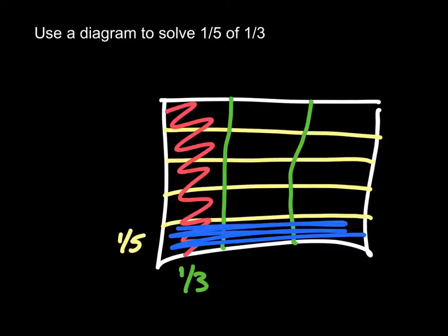I used an area model to solve this problem. I started with my rectangle, divided it into thirds vertically and into fifths horizontally, and then I shaded in my fifths and I shaded in my thirds. And when you look at it, you can see that I have only one section that has both of those numbers in it. So my numerator is going to be one. And there are 15 total pieces in this hole. So I'm going to have 15 as my numerator. So I can say that one-fifth of one-third is one-fifteenth.